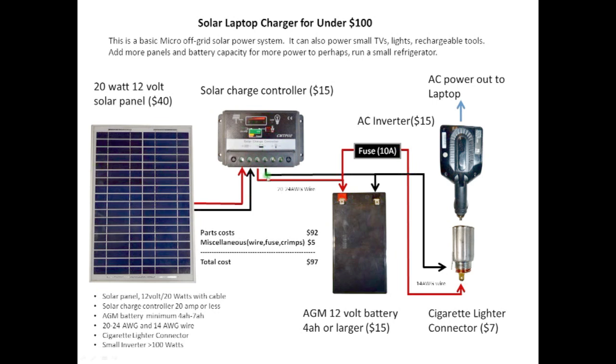From the solar charge controller, we're going to use 24 gauge wires or a little thicker to connect up to the battery. The battery is a standard AGM battery. You want to use at least a four amp hour AGM battery. Then we're going to need some wires that are a little thicker that come off the battery, go through a fuse and connect up to a cigarette lighter adapter. These are thicker because they're going to draw a little bit more power once the laptop is connected.